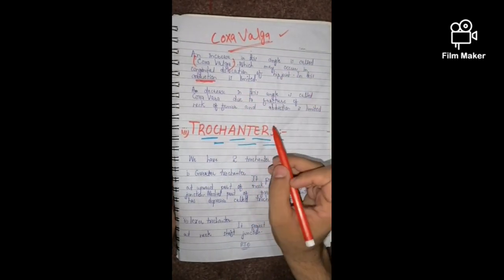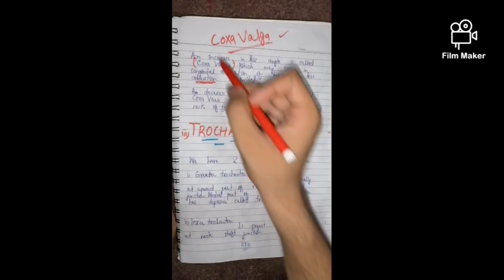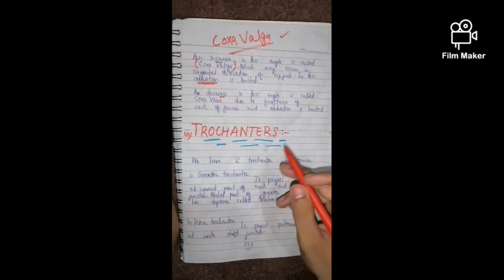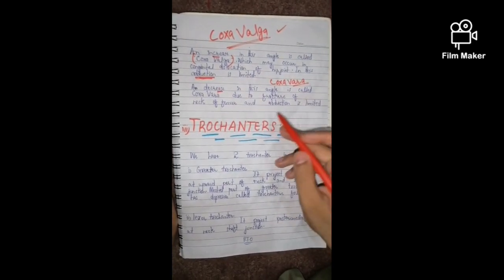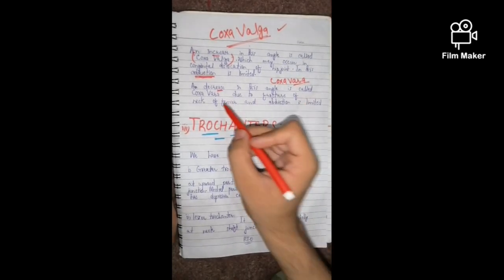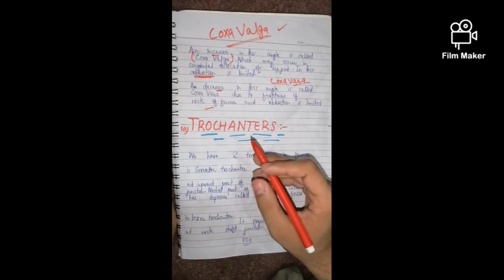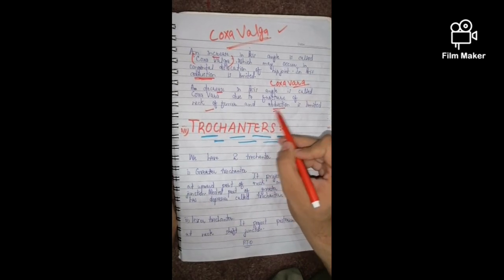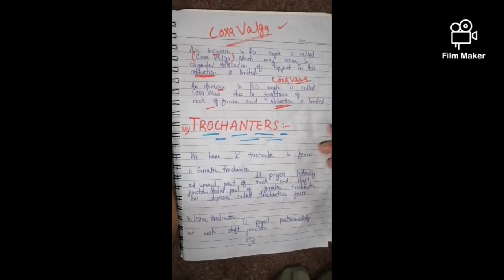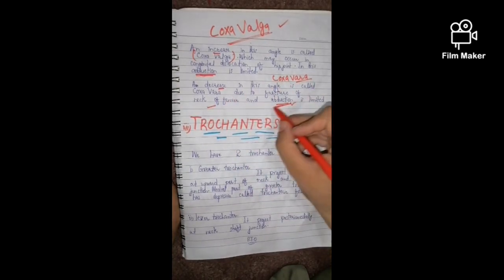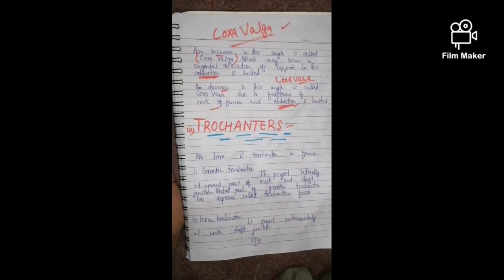The opposite condition, when the neck-shaft angle decreases, is called coxa vara. This can occur due to a fracture of the neck of the femur. In coxa vara, abduction — movement of the femur away from the median plane — is limited. Remember these clinical notes as they are very commonly asked in examinations. Thank you.